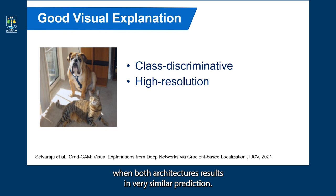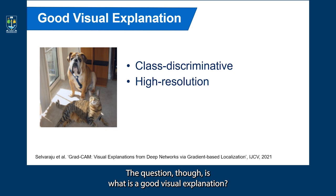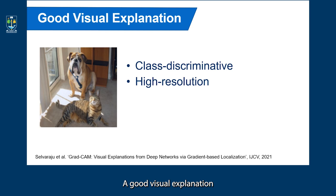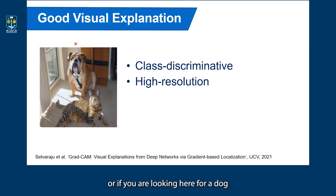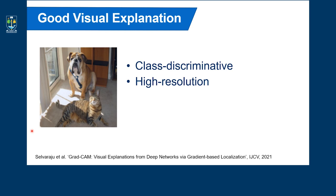Some of these approaches can help us identify robust deep neural network structures from weaker options, even when both architectures result in very similar predictions. The question, though, is what is a good visual explanation? If we consider image classification, a good visual explanation should be class discriminative — for example, identifying the right class in the image: where the cat is located, or the location of the dog in the image. They also need to be high resolution.